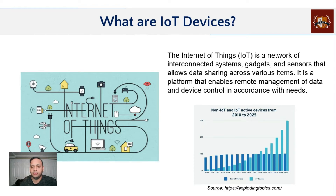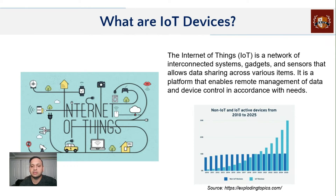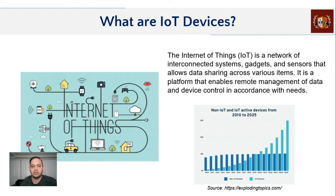Starting from 2010, IoT devices were pretty low compared to non-IoT regular devices. You can see the pace at which it picked up — somewhere around 2019 it stands head to head, and now it's beyond regular devices. By 2025 it's expected to grow to 30 billion, which is three times any non-IoT devices. Think about how many new gadgets you've included in your life that are part of IoT.